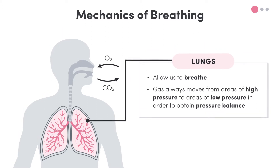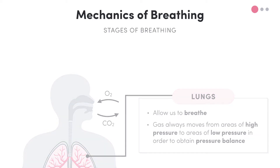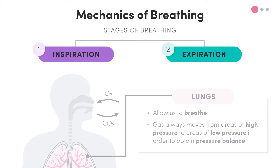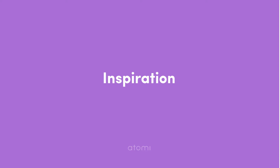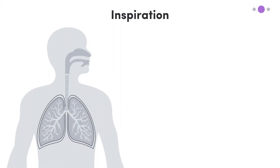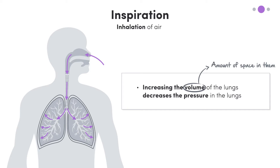There are two stages of breathing, in and out, or in syllabus terms, inspiration and expiration. For inspiration to occur — that is, in order for air to move into the lungs — the volume of the lungs has to increase. Increasing the volume of the lungs, so that's the amount of space in them, decreases the pressure in the lungs.